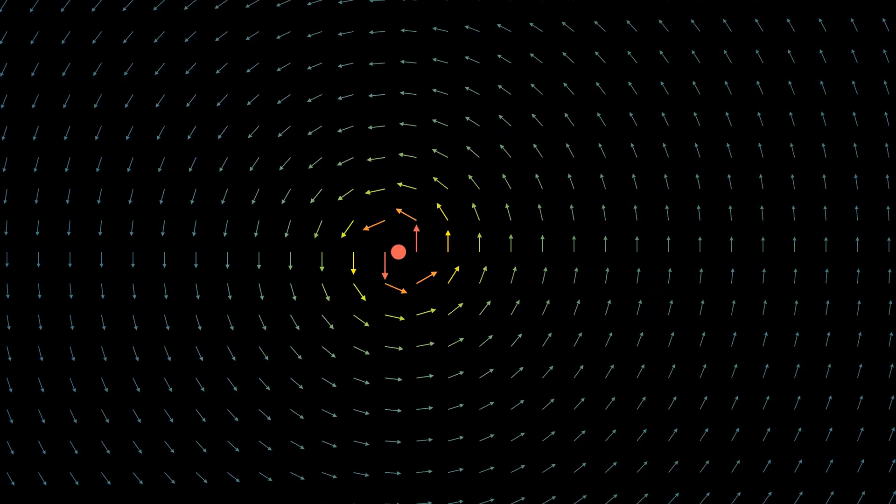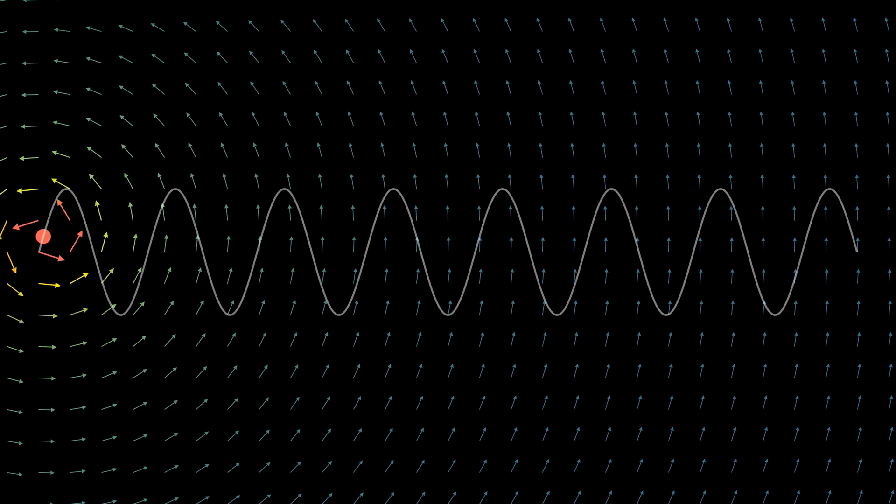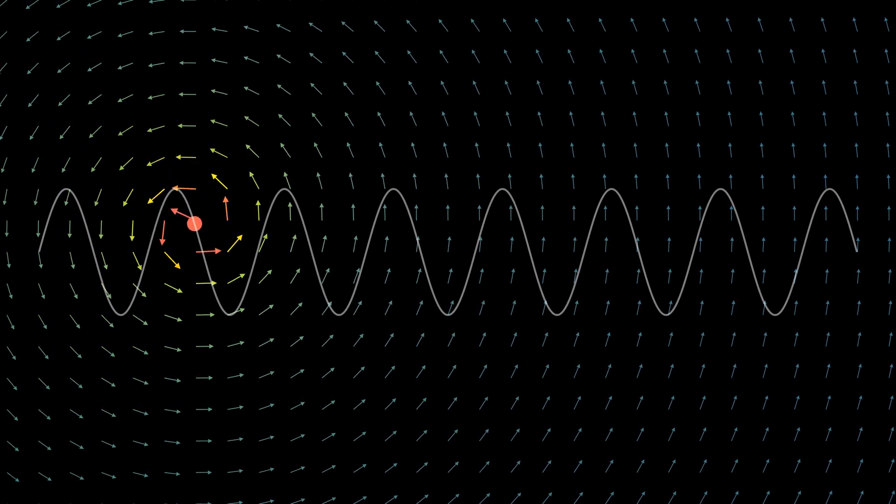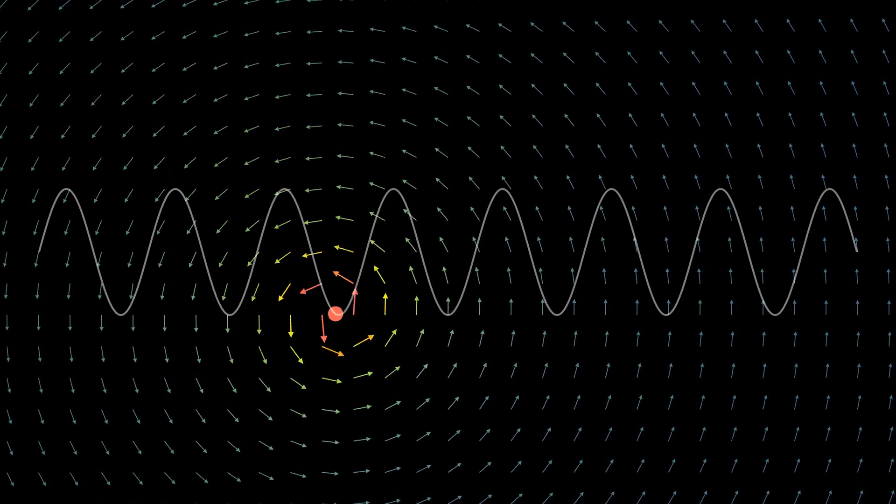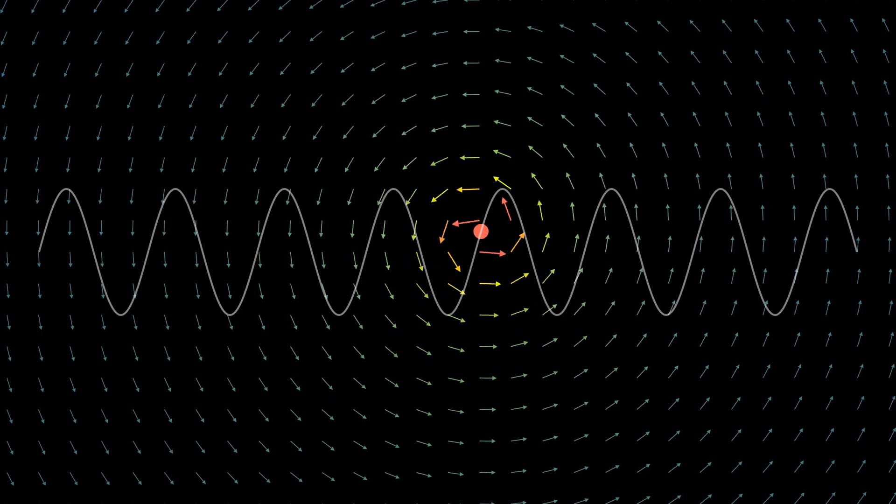And if moving charge produces magnetic field, why isn't every element magnetic? After all, they all have moving electrons in their atoms. Let's understand how humans solve the mystery of magnetism with the help of both Einstein's relativity and quantum mechanics.